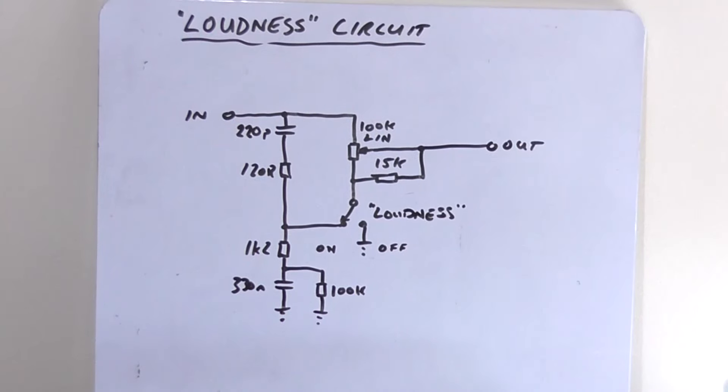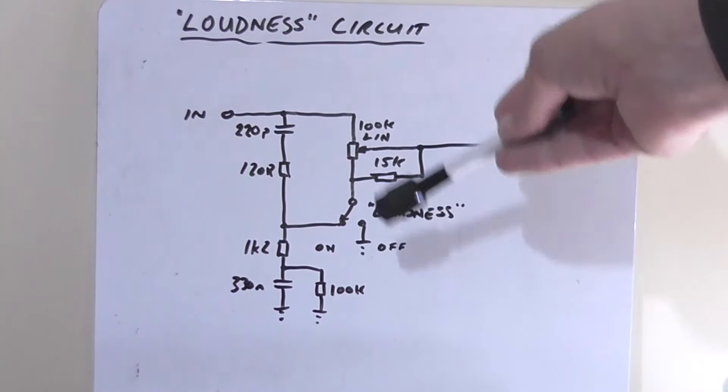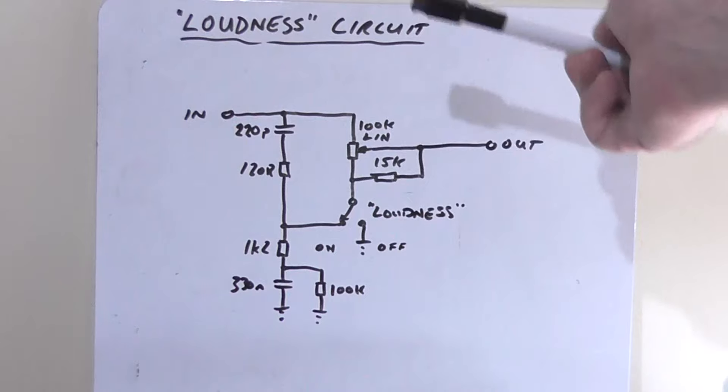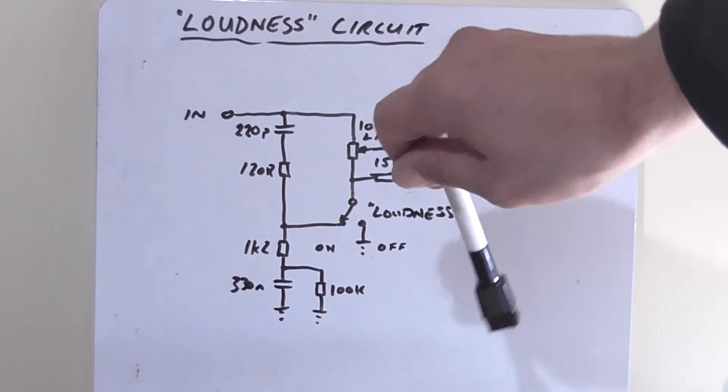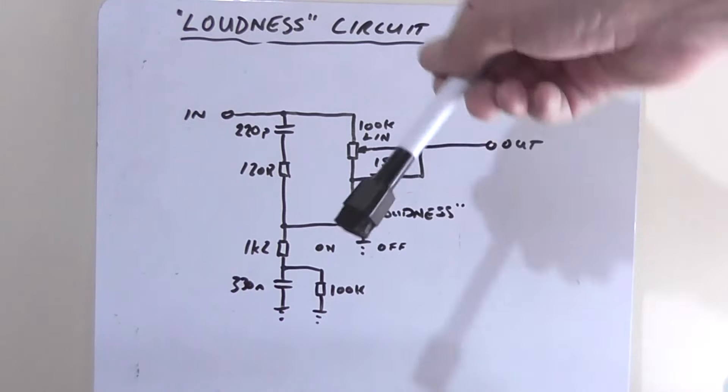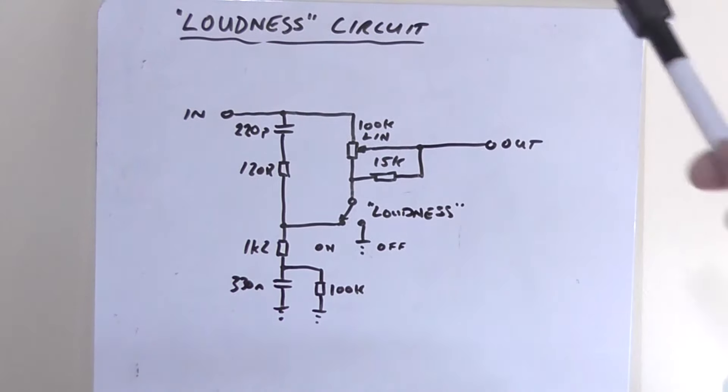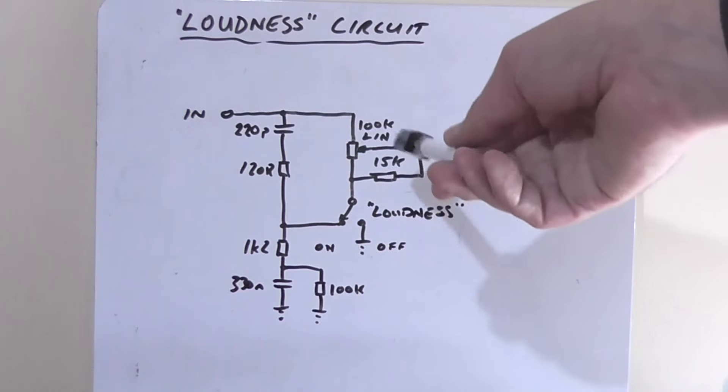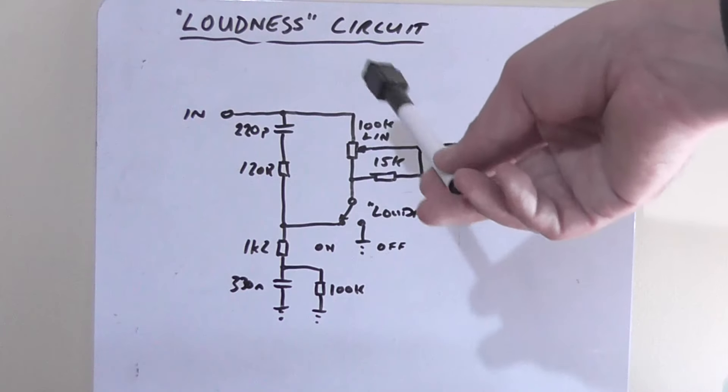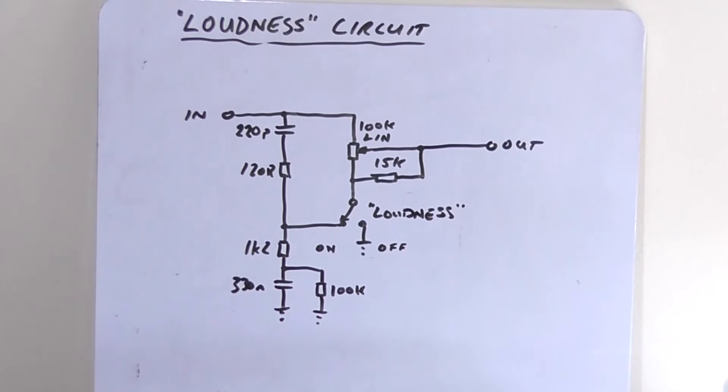The idea of the circuit is it gives you extended bass and treble response down at lower levels of volume, and as you rotate the control up, the compensation and the bass and the treble starts to roll back off back to flat. From testing this circuit, it's around about the halfway point, maybe three-quarter point, where it starts to flatten back out.